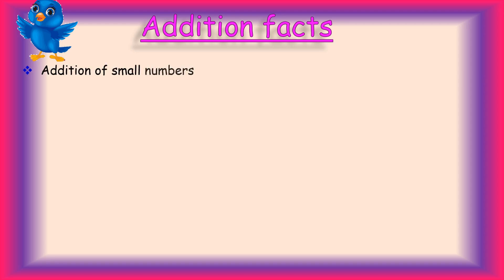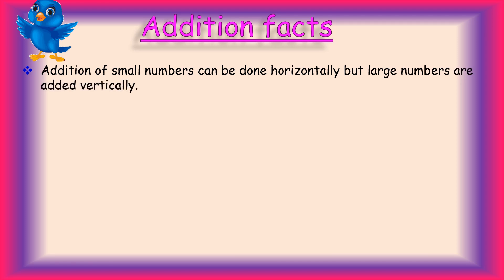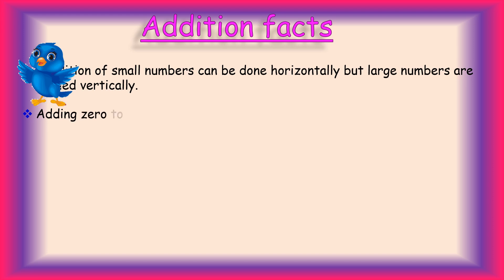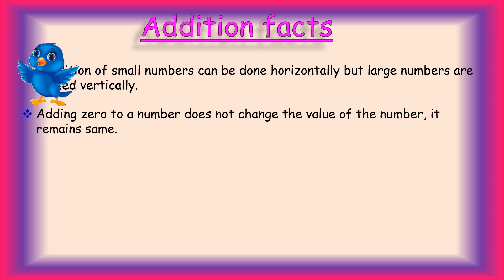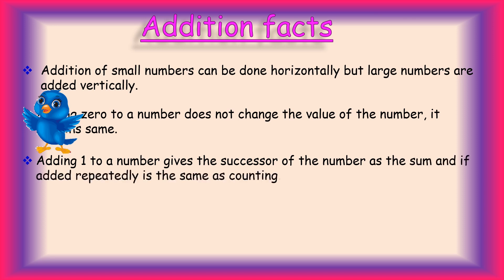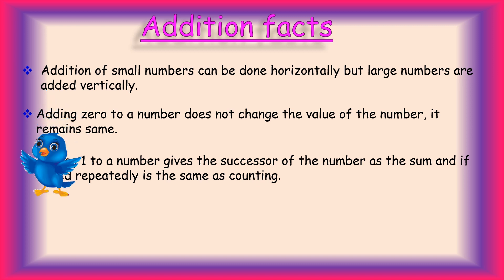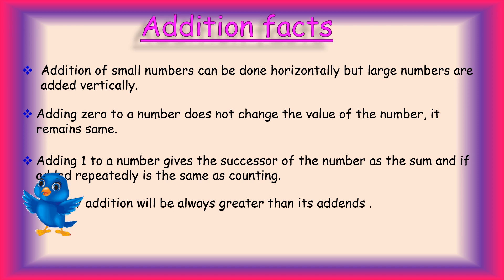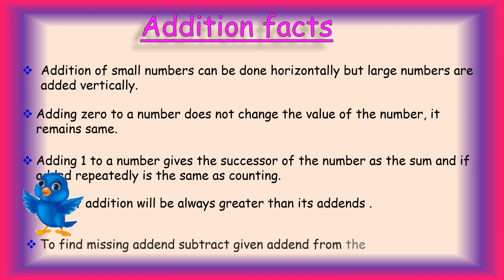Let's revise addition facts. First, addition of small numbers can be done horizontally, but large numbers are added vertically. Second, adding 0 to a number does not change the value of the number — it remains the same. Third, adding 1 to a number gives the successor of the number, and if added repeatedly it is the same as counting. Fourth, the sum of the addition will always be greater than its add-ins. Fifth, to find a missing add-in, subtract the given add-in from the sum. Thank you, stay blessed.